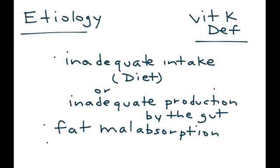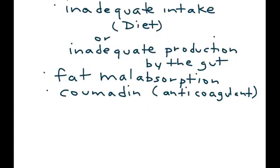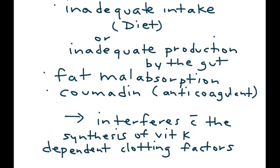Another important cause is medications such as Coumadin. Coumadin is an anticoagulant, and the reason it can cause vitamin K deficiency is because Coumadin interferes with the synthesis of vitamin K-dependent clotting factors.